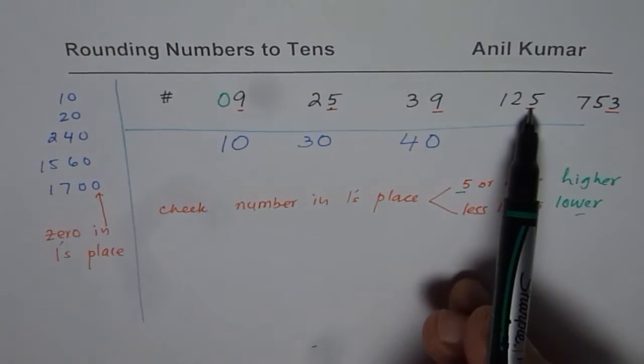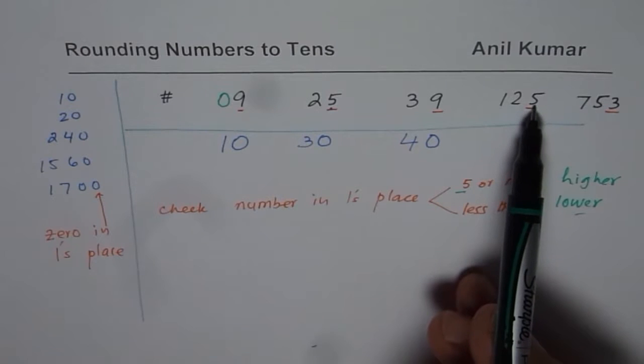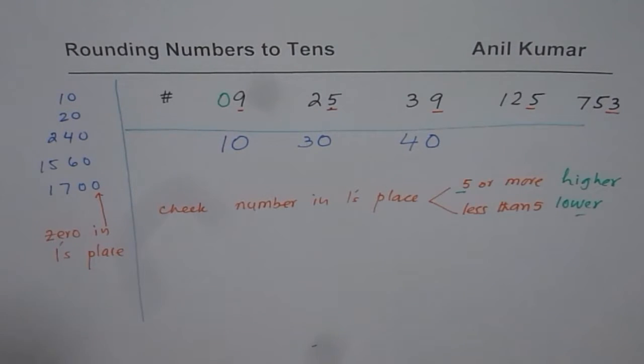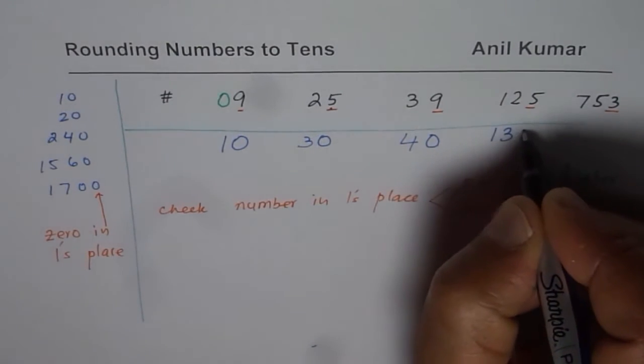Again, we have taken example with 5, 5 or more, increase it by 1. We get 3 here. So the number is 130.